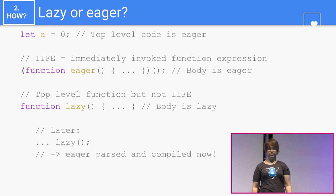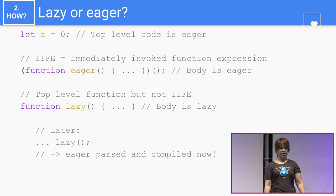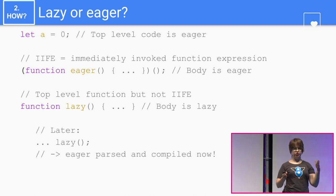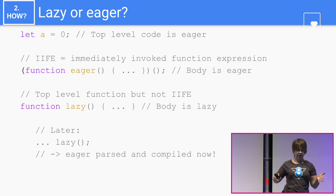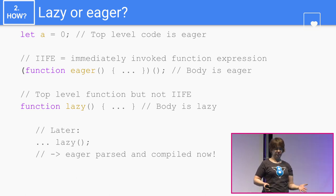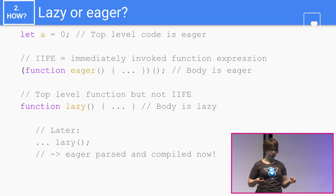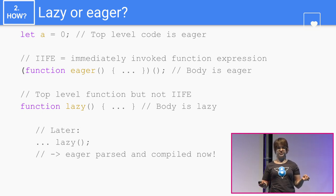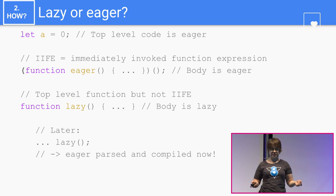Other top-level functions which are not IIFEs are lazy parsed — we use the preparser for that function body. Later on, at some point in time, you might want to call this function, and at that point, when you call it, the function is then eager parsed, compiled, and executed.